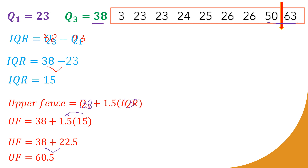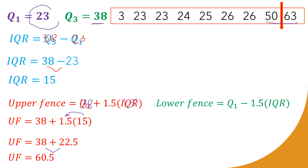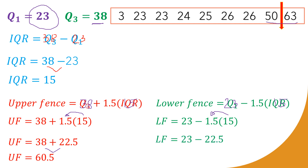Now the lower fence: lower fence = Q1 − 1.5 × IQR. Our Q1 is 23 and our IQR is 15. So: 23 − 1.5 × 15. Multiplying 15 × 1.5 gives 22.5. Subtracting 23 − 22.5, our lower fence is 0.5.